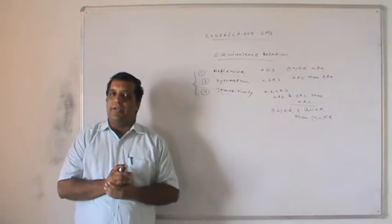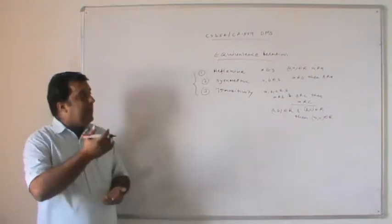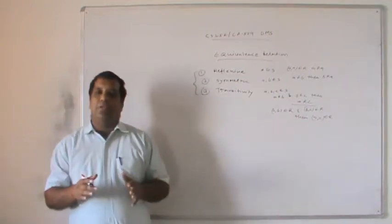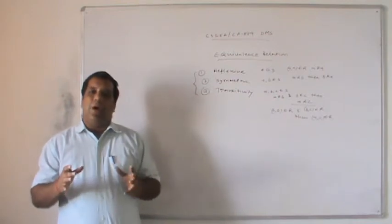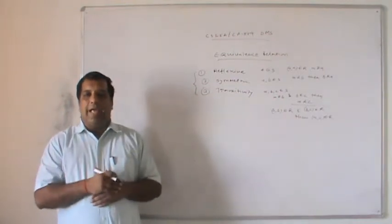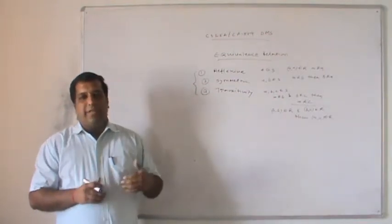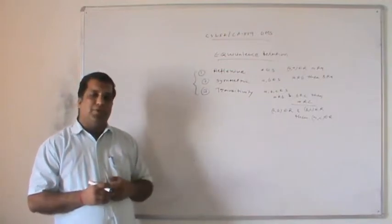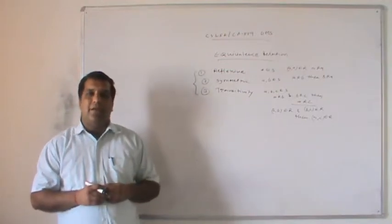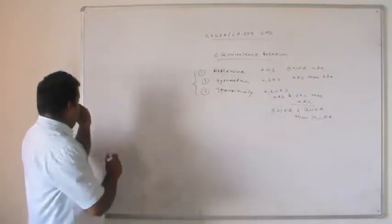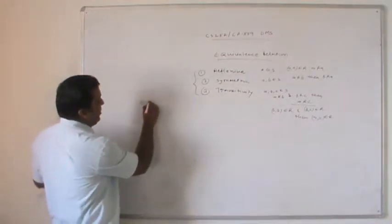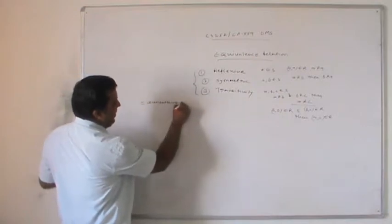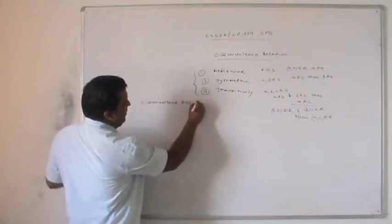When these three properties hold, the relation is called an equivalence relation. The equivalence relation concept is generally used in theory of computation and compiler construction. The next topic is equivalence relation with partition.